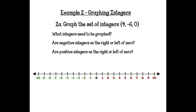Example 2: Graphing integers. 2A says to graph the set of integers 4, negative 6, and 0. Positives are on the right and negatives are on the left. So 4 is positive — we draw a dot at 4 on the right. Then we draw a dot at negative 6 on the left, and another dot at 0. That's all there is to it — just drawing a dot to show where the value is located.